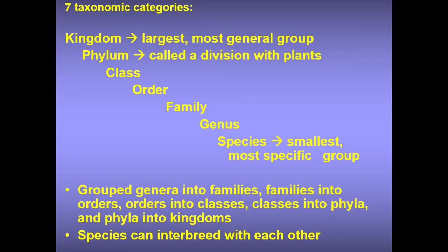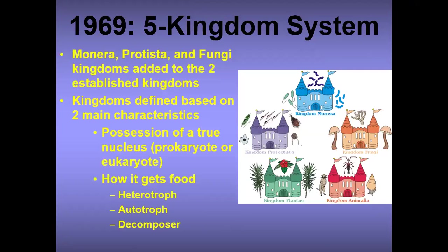Genera are grouped into families, families into orders, orders into classes, classes into phyla, and phyla into kingdoms. Species can interbreed with each other — that's the defining thing about species.